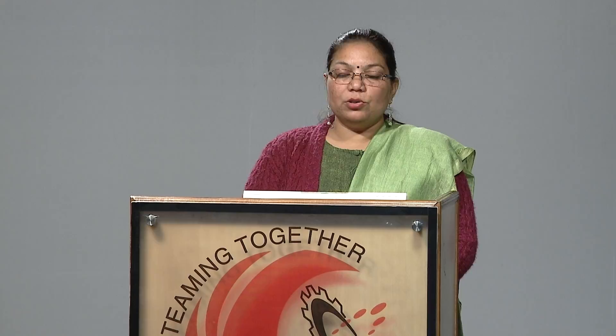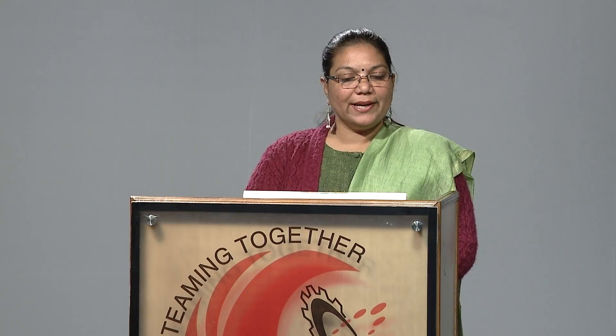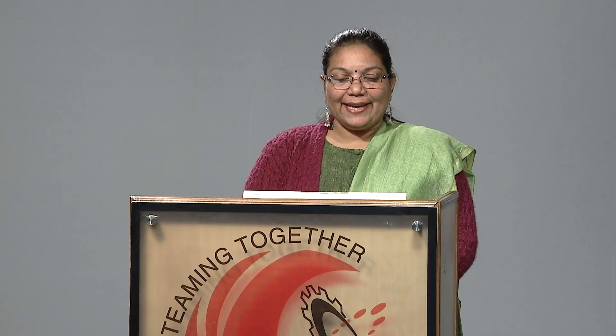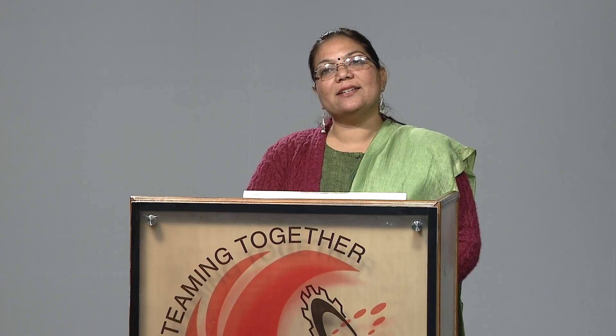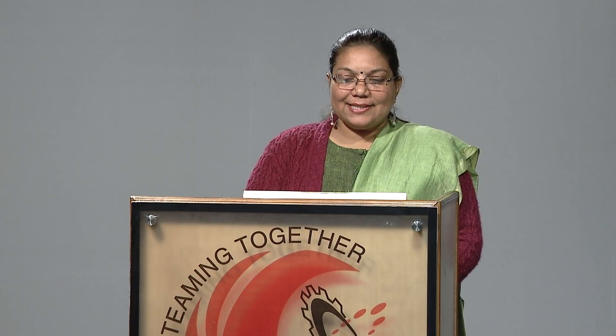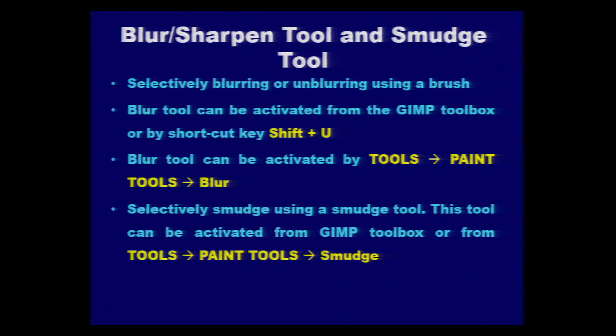There is one more tool which is normally used less, that is the smudge tool. First you should see whether it needs to be applied. The smudge tool is used for selectively smudging an area. It can be activated from the GIMP toolbox or selected from the tools menu under paint tools. The smudge tool is similar to spilling color outside an area. If such kind of editing is needed at some place, we can use the smudge tool for spreading the color.